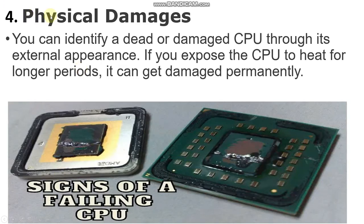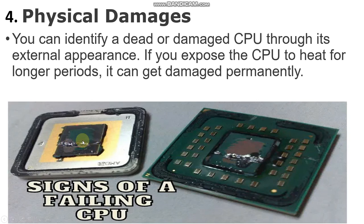The fourth symptom is physical damage. To identify a dead or old CPU, look for physical damage — you can identify a dead CPU through its external appearance. For example, a dead CPU that has been burned — you will see burn signs on it. If you expose the CPU to heat for longer periods, it can get permanently damaged. You will see burn signs; the chip will appear burned.